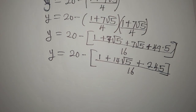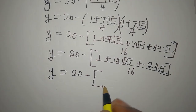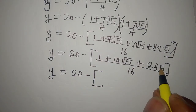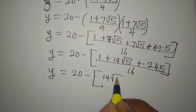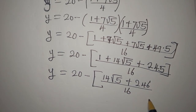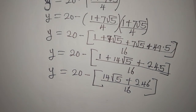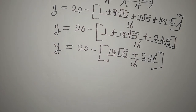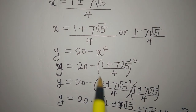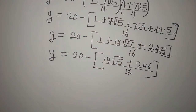Continuing, y equals 20 minus the bracket: we have 1 plus 7 root 5 plus 7 root 5 which is 14 root 5, then plus 49 times 5 which is 245, all over 16. We can simplify 1 plus 245 to 246, so y equals 20 minus 246 plus 14 root 5, all over 16. So when x equals 1 plus 7 root 5 over 4, y has this corresponding value.